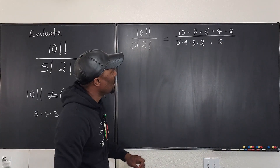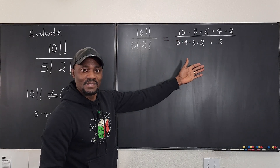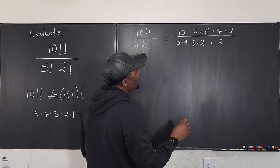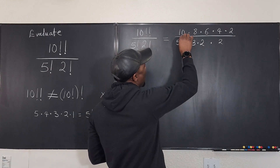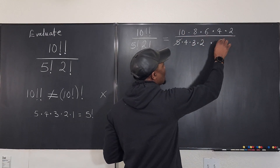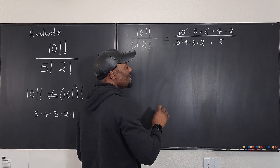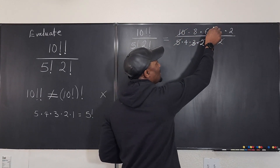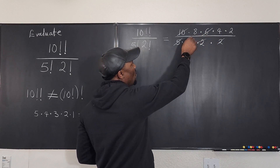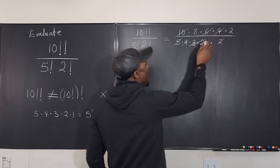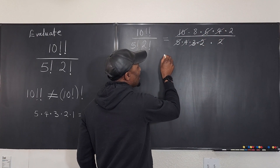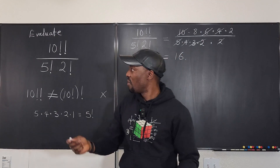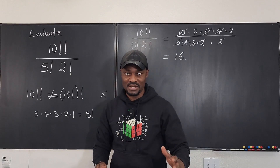All you have to do now is simplify. I'm going to take out things I can easily cancel. I know that 5 times 2 will cancel the 10. I know that 3 times 2 will cancel the 6. And 4 will cancel itself. The answer, ladies and gentlemen, is 16. So the simplified form of this expression is just the number 16.